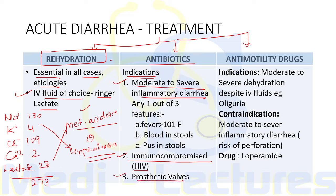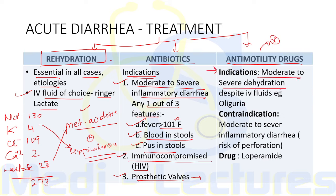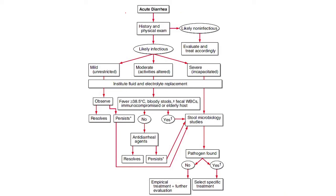The patient is said to have moderate to severe inflammatory diarrhea if there is fever more than 101°F, presence of blood in stools, or pus in stools — these are the indications for antibiotics. Anti-motility drugs should not be given to every patient. Indication is moderate to severe dehydration despite IV fluids, such as oliguria. Contraindication is moderate to severe inflammatory diarrhea, as there is risk of perforation. The most commonly used anti-motility drug is loperamide.